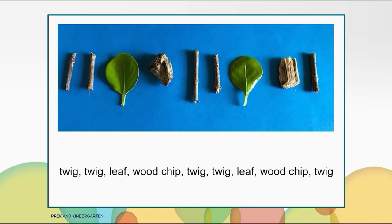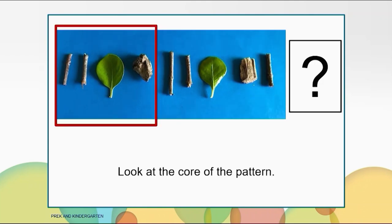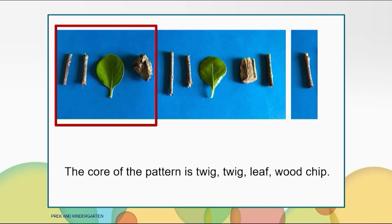This time I'm going to use twig, leaves, and wood chips. Twig, twig, leaf, wood chip. Twig, twig, leaf, wood chip. Twig. What comes next? Remember to look at the core of the pattern because that will give you a clue to what comes next. Yes, the twig comes next. The core of the pattern is twig, twig, leaf, wood chip. So what comes next is the twig.